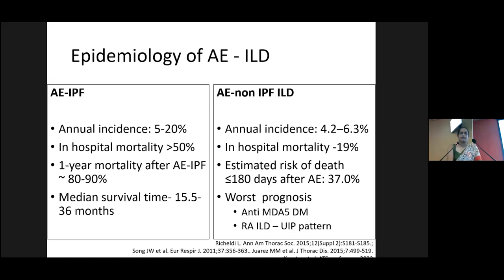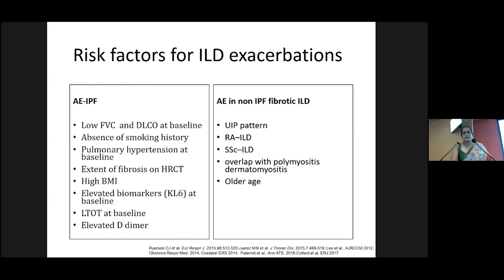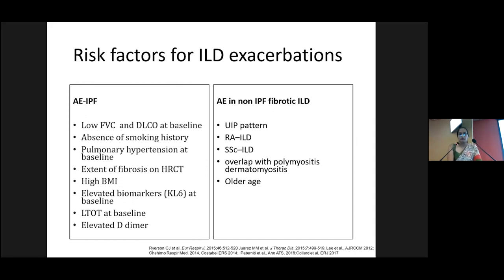Regarding the epidemiology of acute exacerbations of ILDs, they carry very high mortality. In non-IPF ILD patients compared to IPF ones, there is a better mortality risk. The one-year mortality after acute exacerbation in IPF is around 90%, and in non-IPF ILDs including CTD-ILDs it is around 40%. Risk factors for ILD exacerbations include more advanced underlying ILD, low FVC, low DLCO, extensive fibrosis on HRCT, home oxygen use, and pulmonary hypertension. Among non-IPF fibrotic ILDs, UIP pattern, rheumatoid arthritis ILD, systemic sclerosis ILD, polymyositis, and dermatomyositis are those that get more exacerbations.